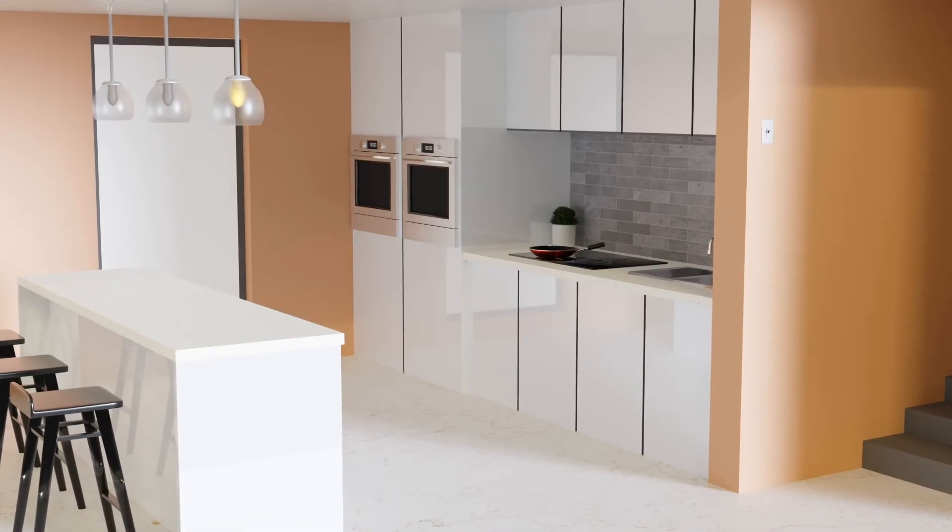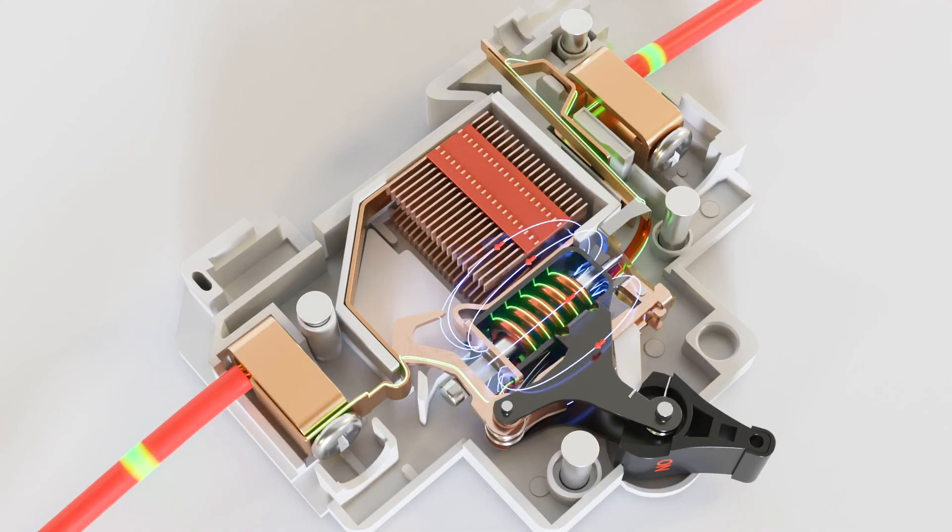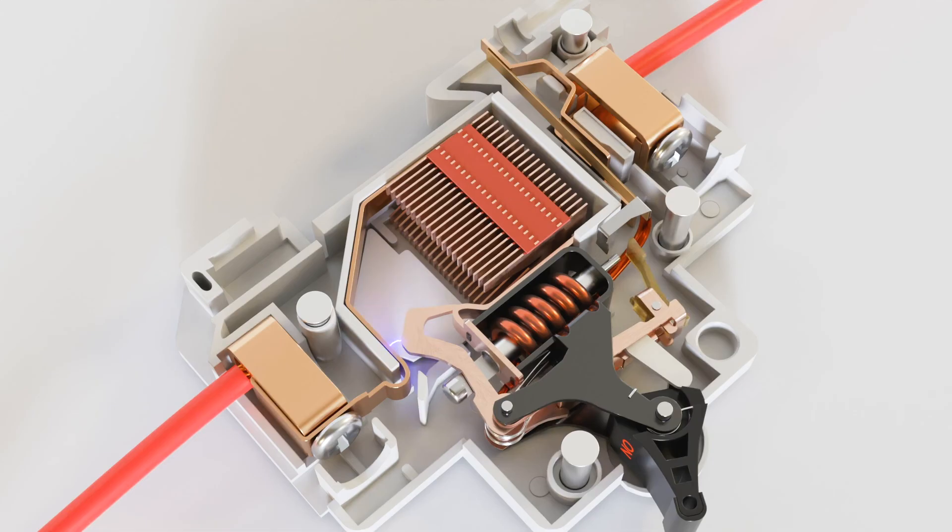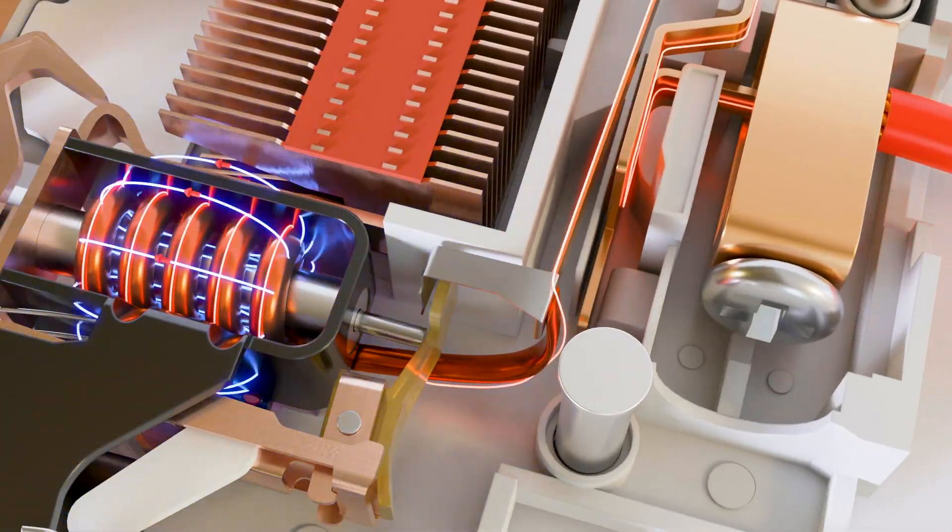Please note that a short circuit is much more dangerous than overloading. That's the reason a circuit breaker quickly trips within two to five milliseconds during a short circuit. But in case of overloading, it takes few seconds to trip.